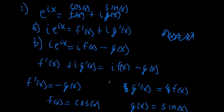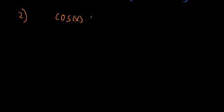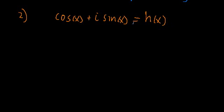Now let's go on to the second proof. This proof is complementary to the first proof — we're going to do the same things, but start from a different position. We're going to start off with cosine X plus I times sine of X is equal to some function we don't know, which we'll just call H of X. We have one expression, and like before, we're going to do two manipulations of it.